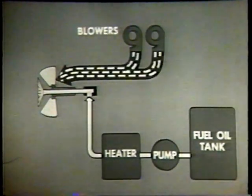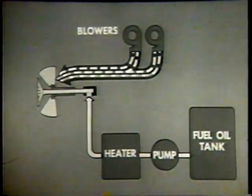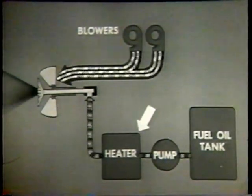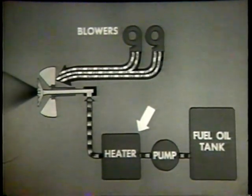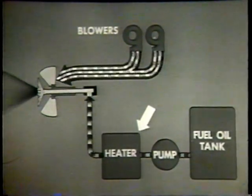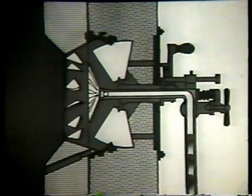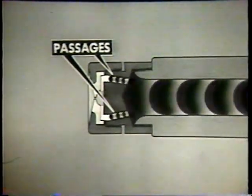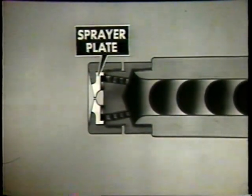The force draft blowers send a strong blast of air to the burner. The fuel oil pump sends the oil through the heater where the oil is heated to give it good flow quality. Then the oil is pumped to the burner. This simplified cutaway of the burner shows how the fuel oil is forced through the burner barrel to the atomizer nozzle, where a series of passages guide the oil to the sprayer plate. The sprayer plate makes the oil rotate at high speed, breaking up the oil into particles. The oil leaves the atomizer as a hollow, mist-like cone or spray.